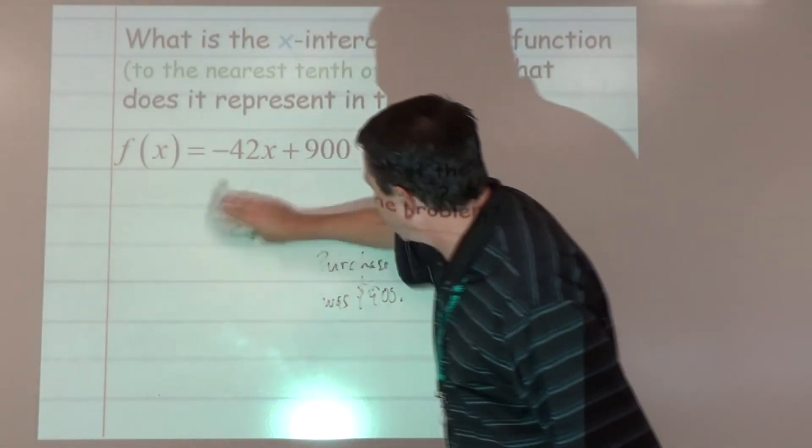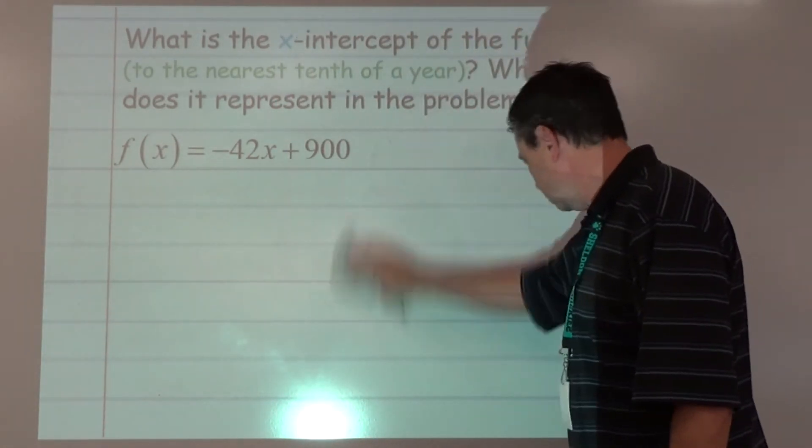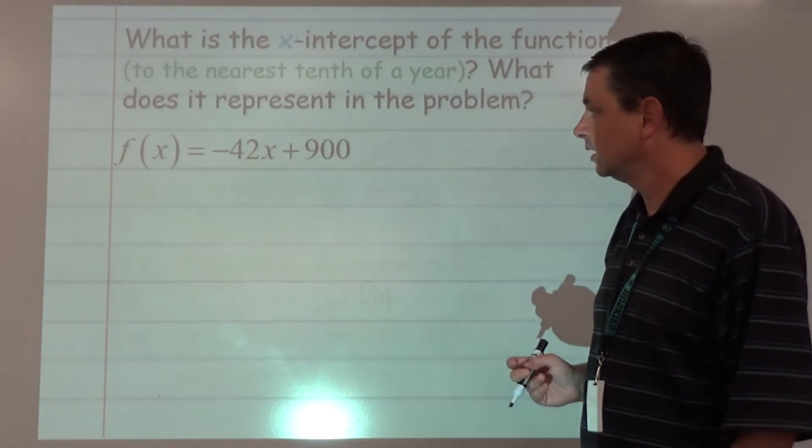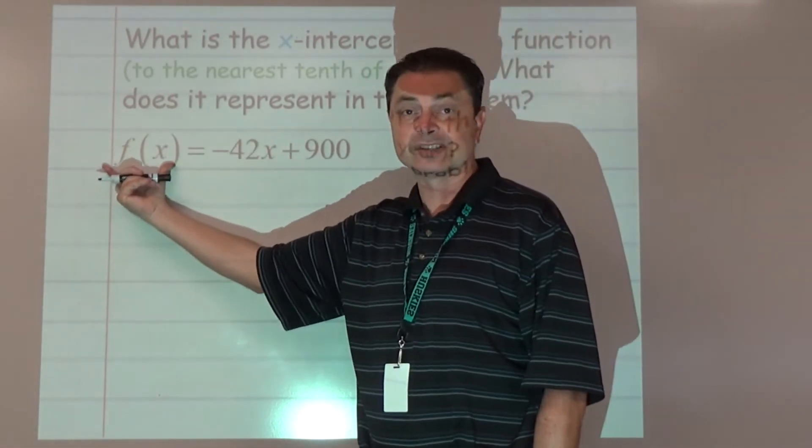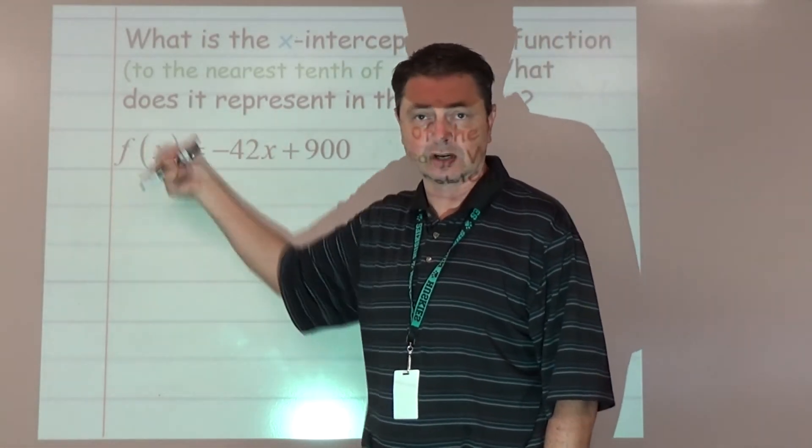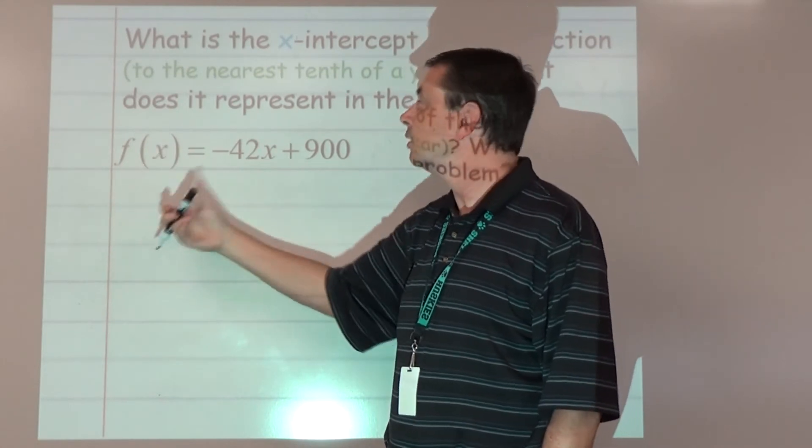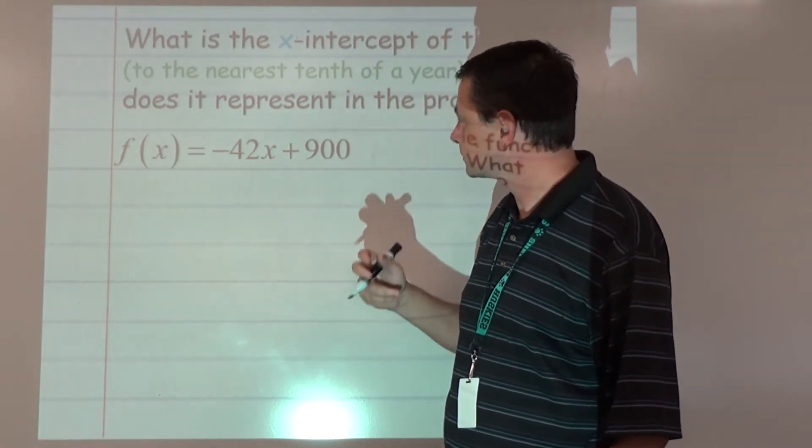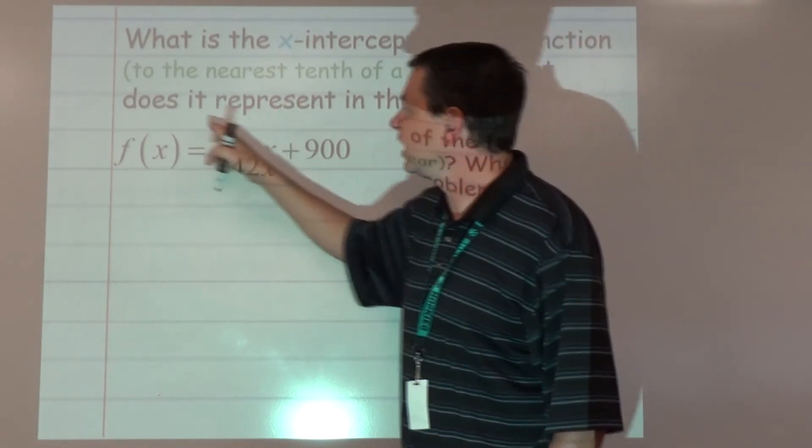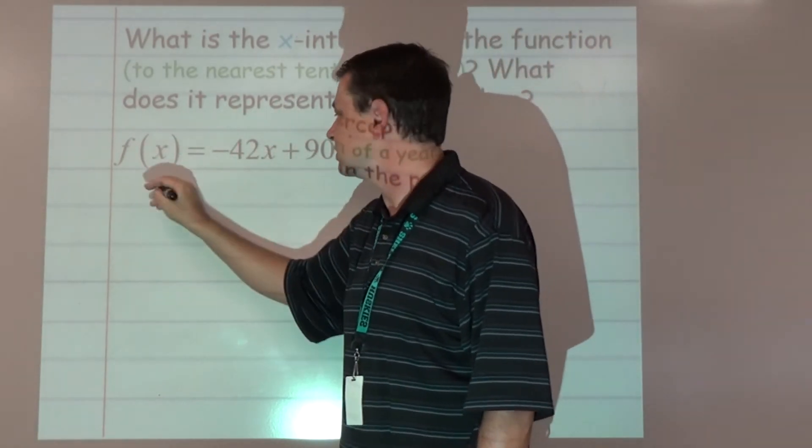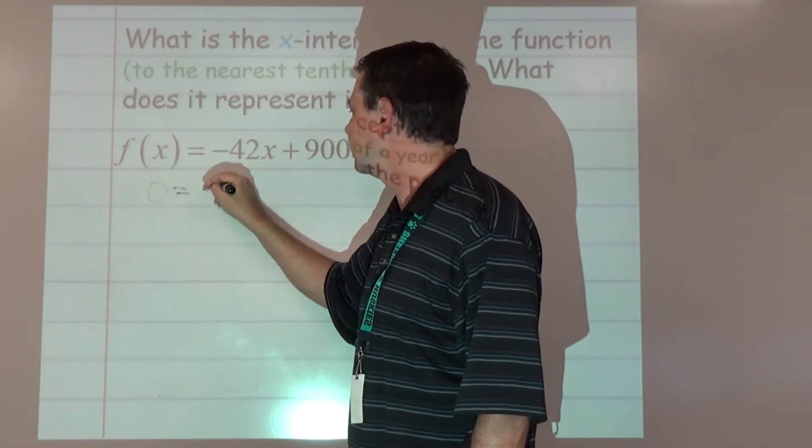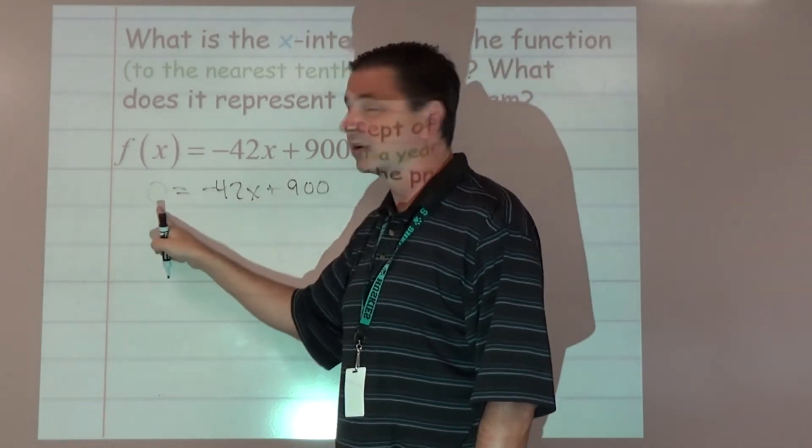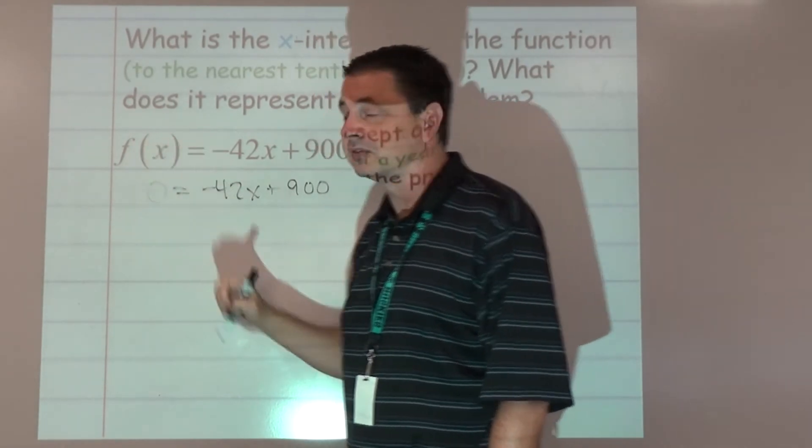What is the x-intercept? What does that mean? For the y-intercept we replaced f(x) with zero. For the x-intercept we want to do the opposite - replace f(x) with zero. So zero equals negative 42x plus 900. We replace the y-coordinate, which is f(x), with zero.